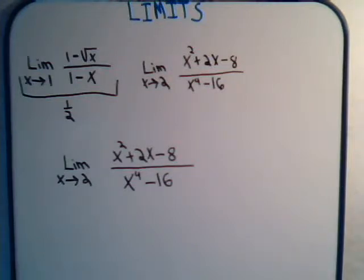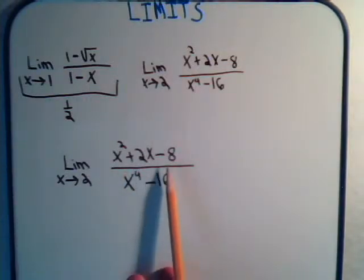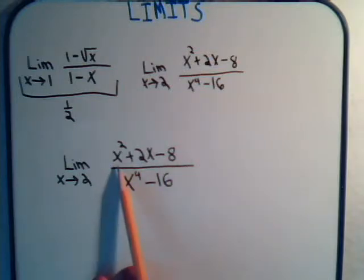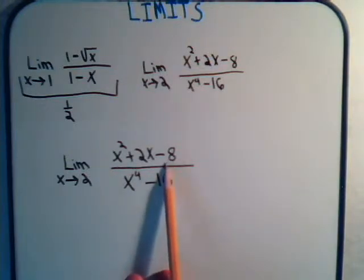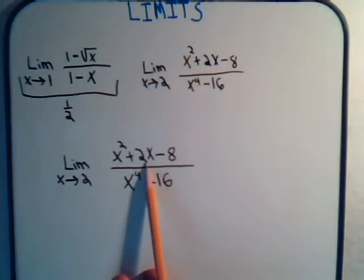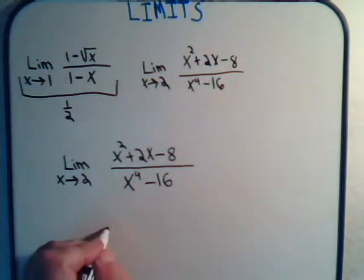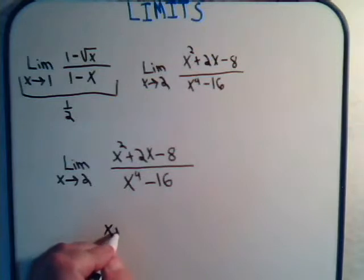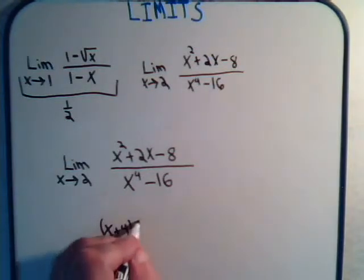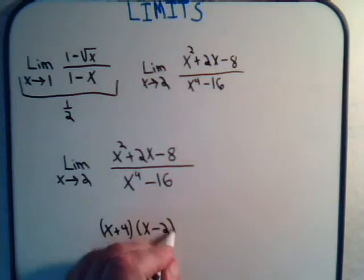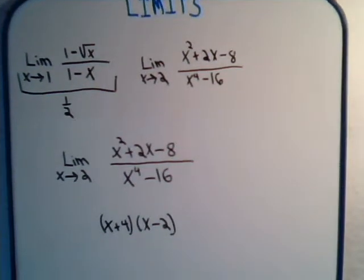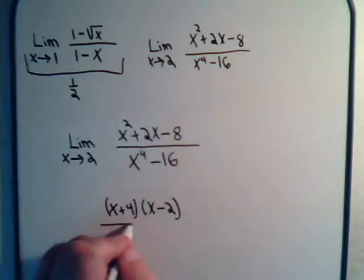Let's look at this more closely. In the numerator, we have x squared plus 2x minus 8. Factoring this, we're looking for two numbers that multiply to give minus 8 and add to give plus 2. That's plus 4 and minus 2. So the numerator factors as x plus 4 times x minus 2.